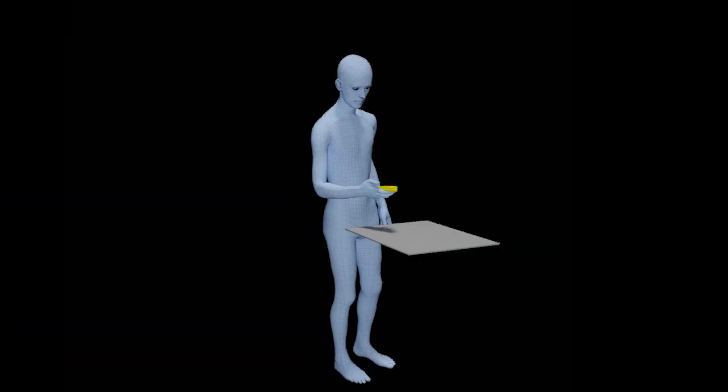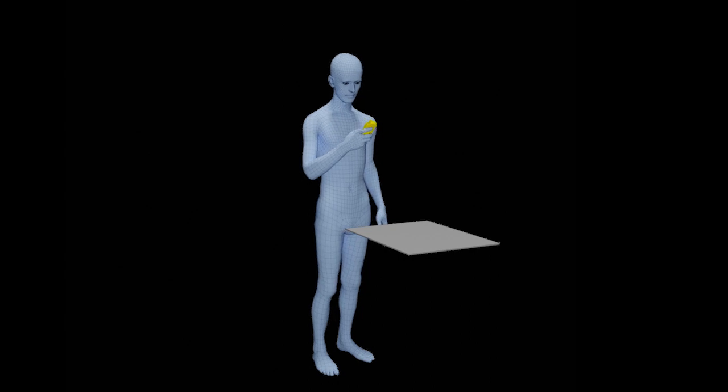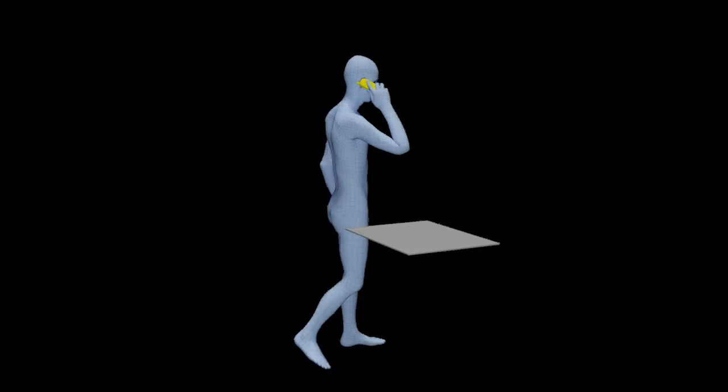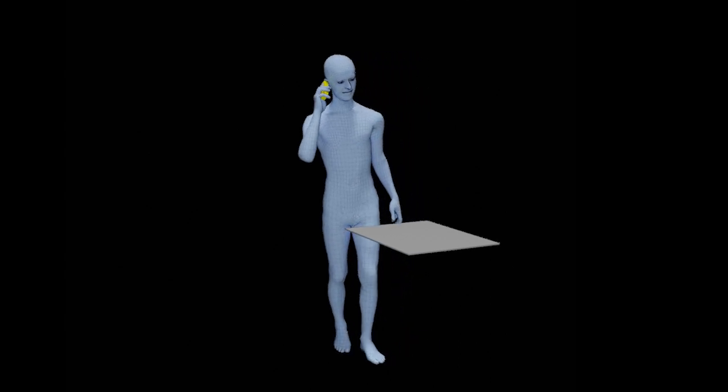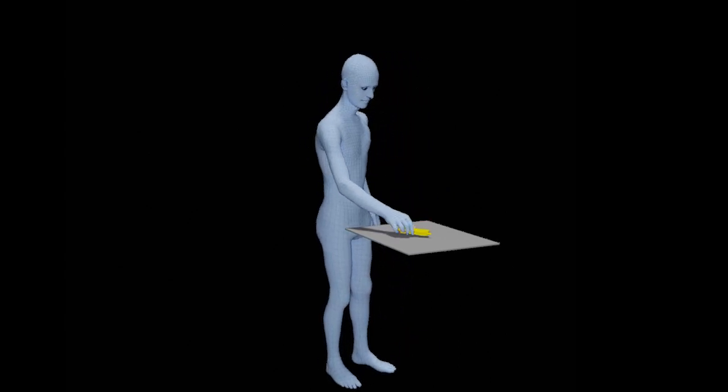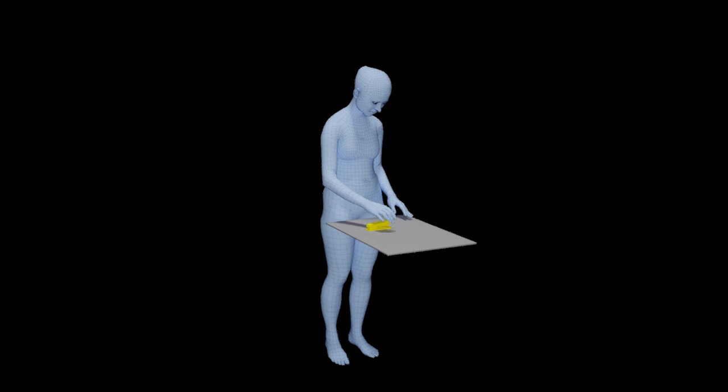A key goal of computer vision is to estimate human object interactions from video. The way humans interact with objects is important to understand human goals and behavior. Learning models of human object interaction requires data.